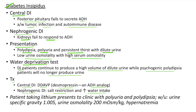Now let us see a clinical case of diabetes insipidus. A patient taking lithium presents to clinic with polyuria and polydipsia. Workup shows urine specific gravity of 1.005, urine osmolality of 200 milliosmol per kilogram and hypernatremia. The normal value of urine specific gravity is 1.010 to 1.030 — as you can see, it is reduced. The normal urine osmolality is between 500 to 800 — also reduced here. This is the classic case of diabetes insipidus. Lithium is a risk factor for diabetes insipidus.